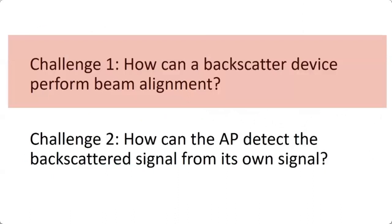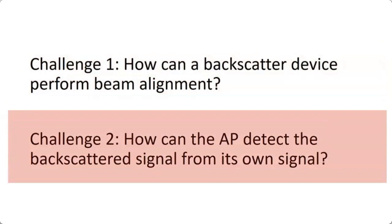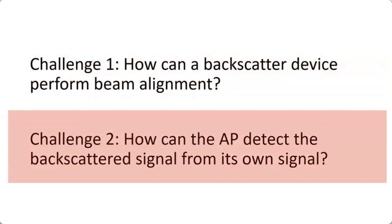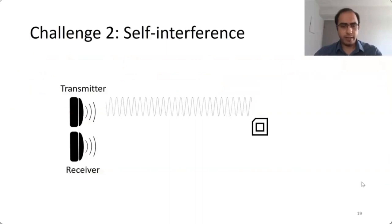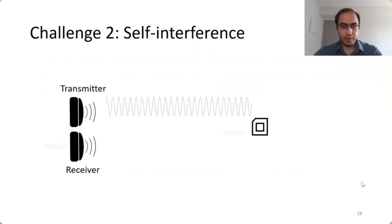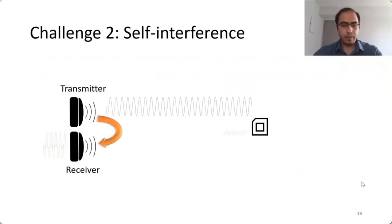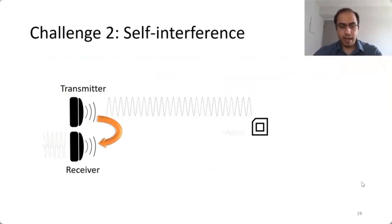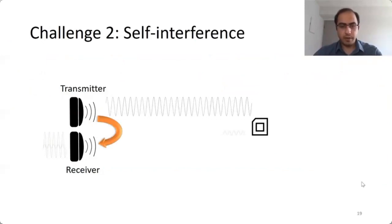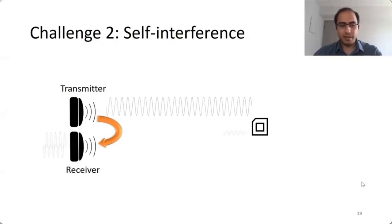Now let's focus on the second challenge: the self-interference problem. The access point sends a sine wave toward the node, the node reflects it back, and the receiver tries to decode the node's data. However, there is strong coupling between the transmitter and receiver that masks the signal coming from the node, making it impossible to decode the node's data easily.